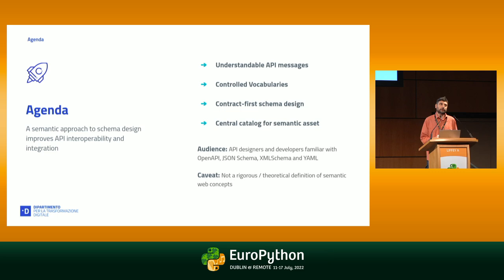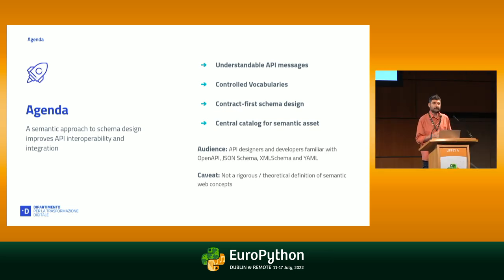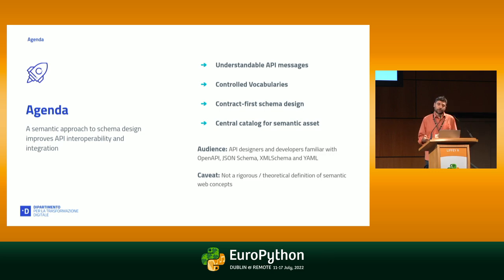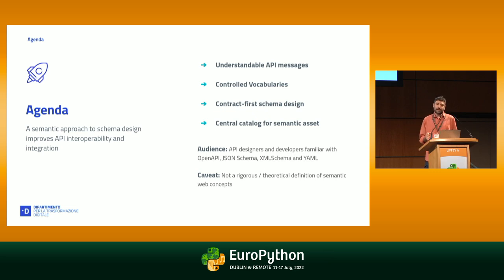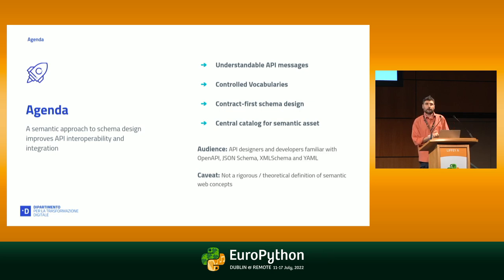I will first explain the concept of controlled vocabularies and then how to use them for creating interoperable REST APIs based on contract-first schema design. At the end I'll show how a central data catalog for semantic interoperability would support this approach. But don't worry, this is not a talk about semantic web theoretics — and for semantic web folks, please forgive me — I will try to make things understandable.